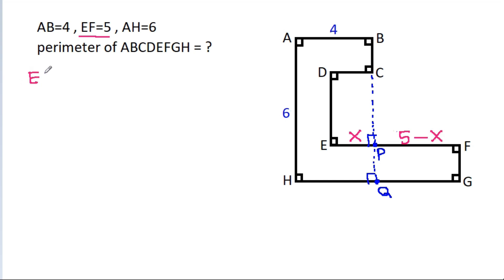And EP will be equal to DC, that will be X. And AB will be equal to HQ, that will be 4.